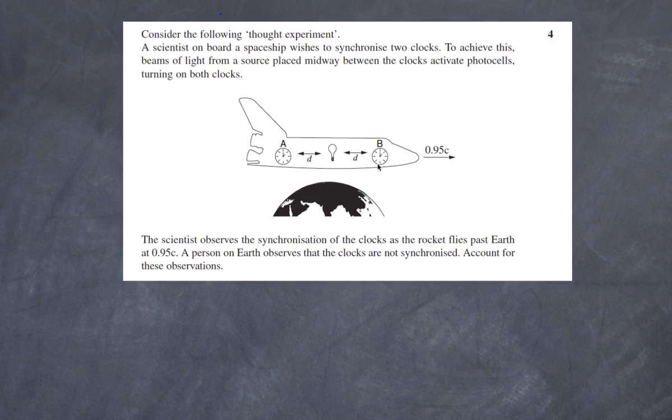As the light pulse arrives at A and B, the timer starts. It's all about the synchronization of these two clocks. We're asking what is observed by a person on the spacecraft and by a person on the ground. The person on the spacecraft sees them starting at the same time, and the person on Earth sees them starting at different times, and you have to account for these observations.